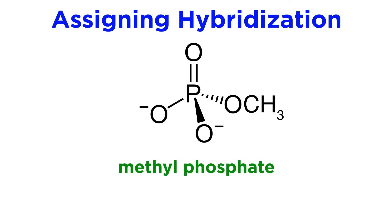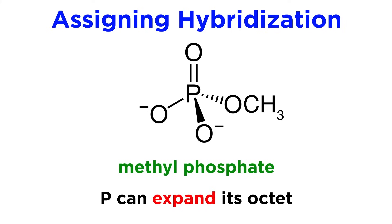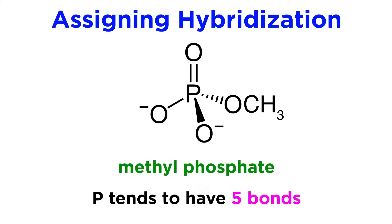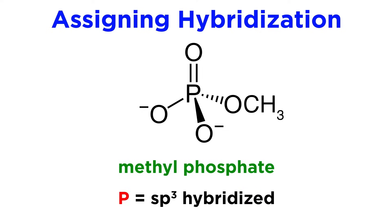Analogous to nitrogen is phosphorus, and since this is in the n equals 3 shell, it has access to d orbitals, which means it can expand its octet. Phosphorus will most frequently have five bonds, like here with methyl phosphate. Here, phosphorus has four electron domains, between three single bonds and one double bond, so it will be sp3 hybridized, with bond angles very close to 109.5 degrees.